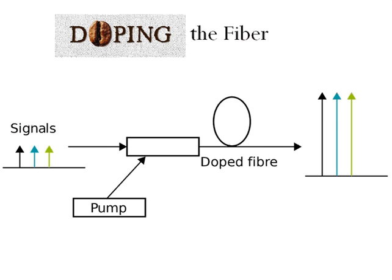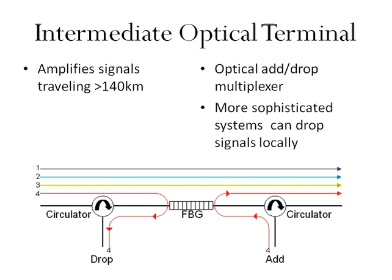With signals that have to travel even greater distances, the integrity of the signal may become compromised. In this case, an intermediate optical terminal — sometimes called optical add-drop multiplexers — amplifies multi-wavelength signals traveling over 140 kilometers before reaching the remote site. More sophisticated systems are able to take a single signal out of the multiple wavelength signal, remove and drop it locally, and add a different signal.